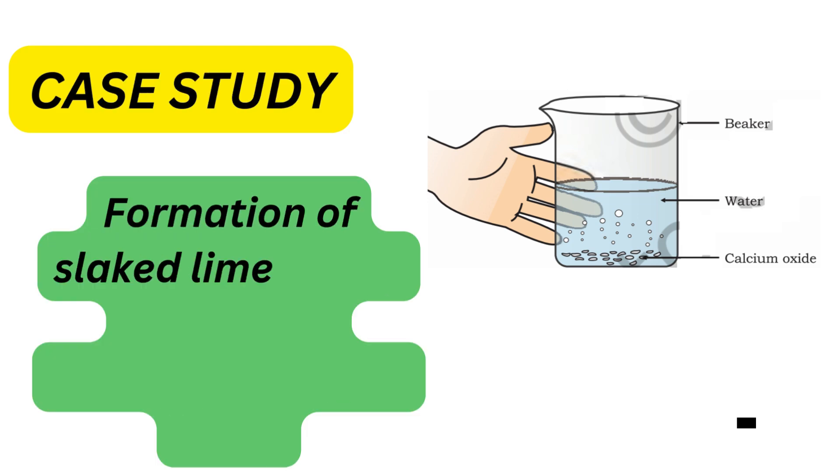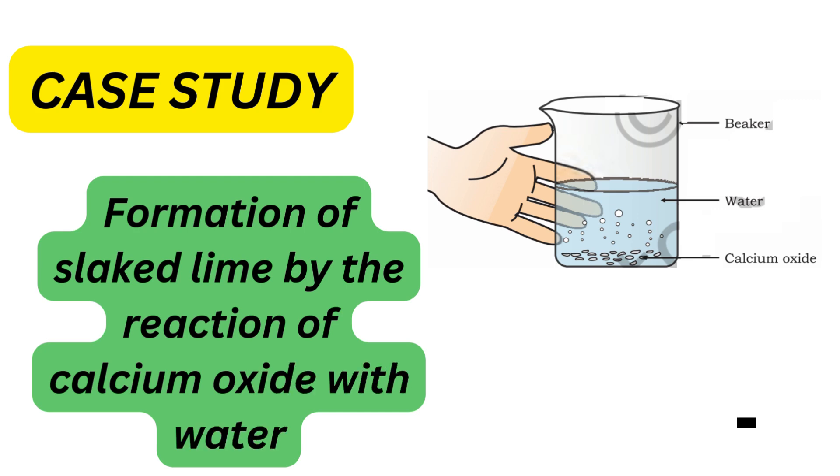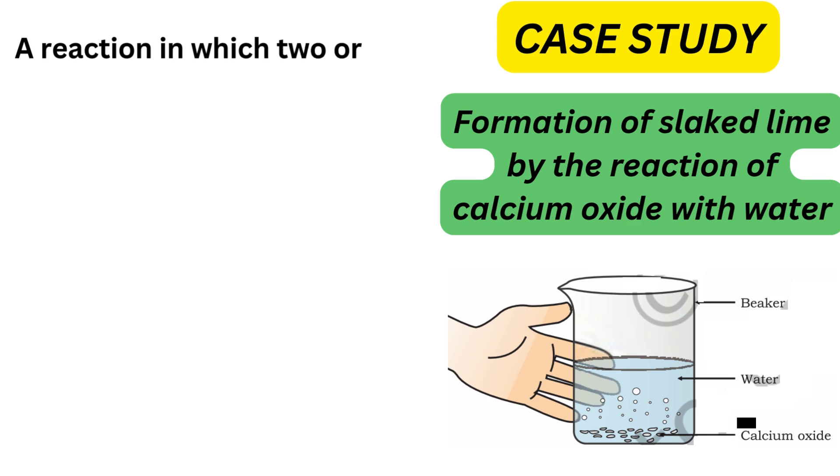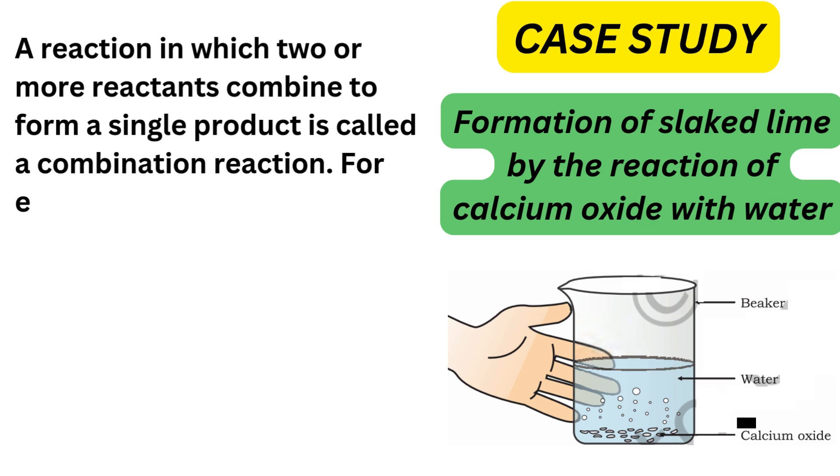Case Study Question on Formation of Slaked Lime by the Reaction of Calcium Oxide with Water. A reaction in which two or more reactants combine to form a single product is called a combination reaction.